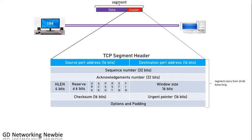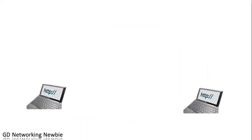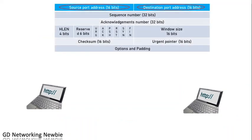The size of the TCP header is from 20 bytes to 60 bytes. This header has many fields to support the data communication between the nodes or between the transport layers. First, we are going to discuss the source port address and the destination port address.